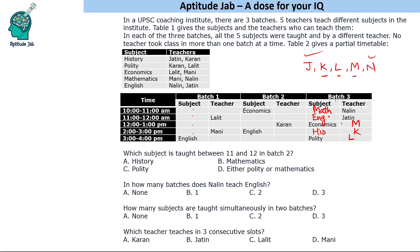Now we move to batch 2. We have to fill several people here. Lalit is already present in batch 3 and in another slot, so Lalit cannot teach in the 11 to 12 or 3 to 4 slots. Lalit teaches either quality or economics, and does not teach English, so Lalit will teach economics in batch 2. Now we have to fill three more people.